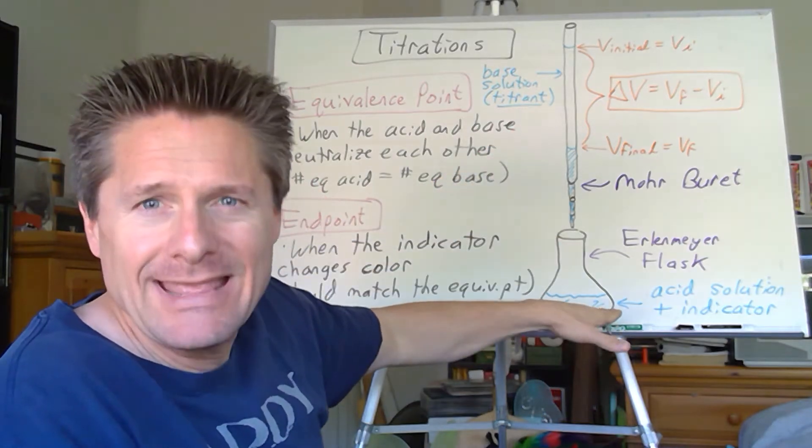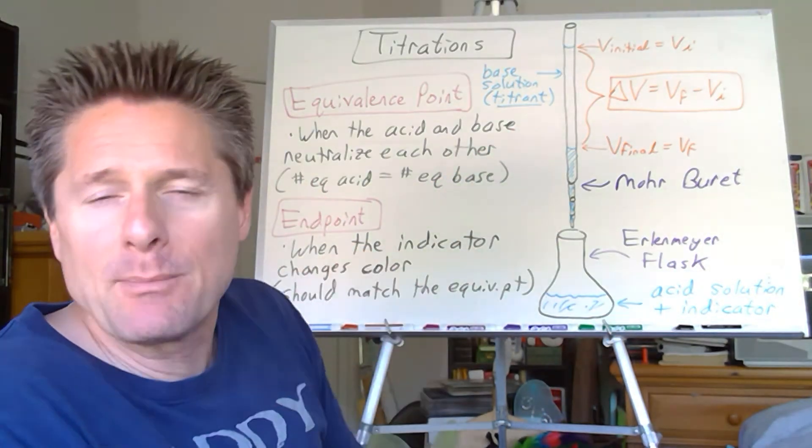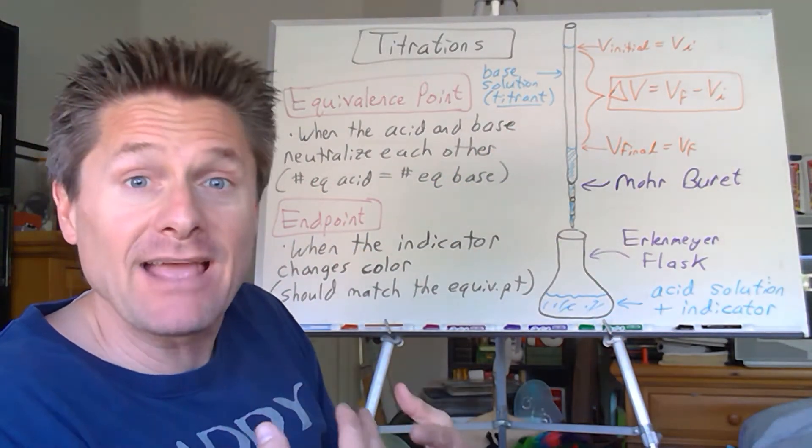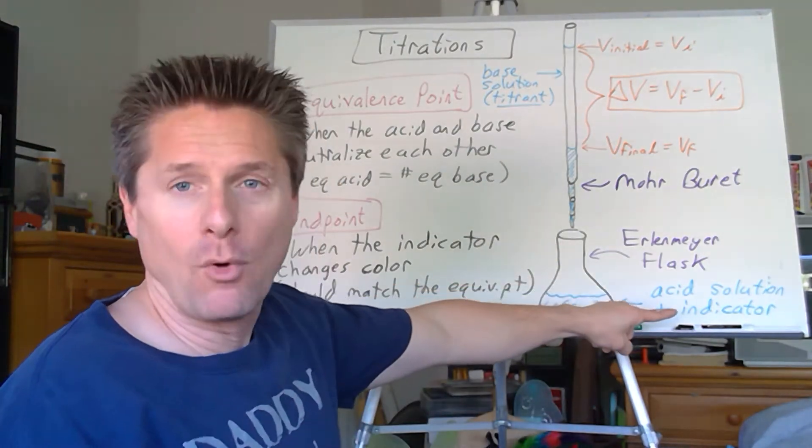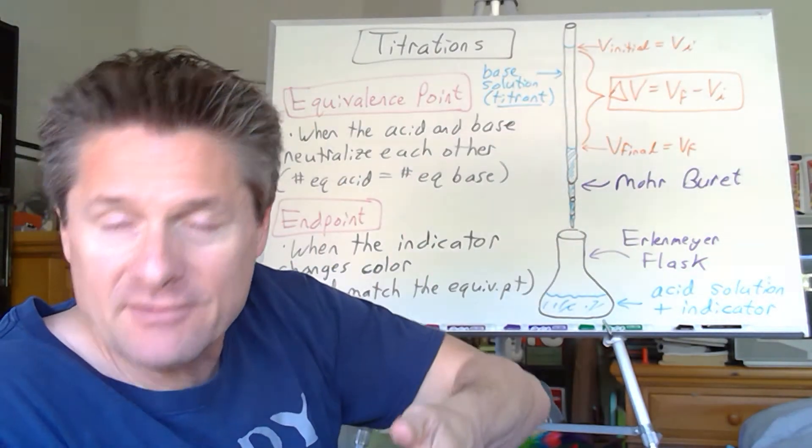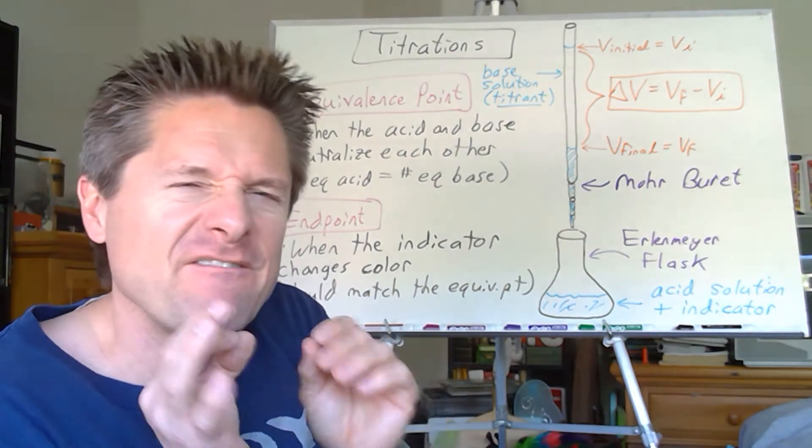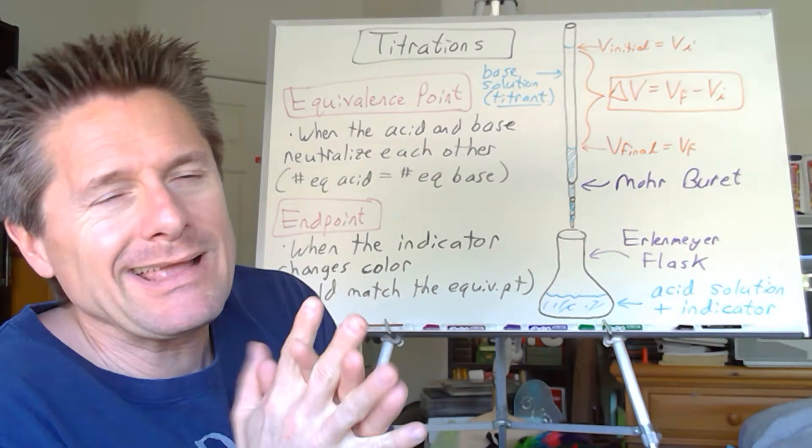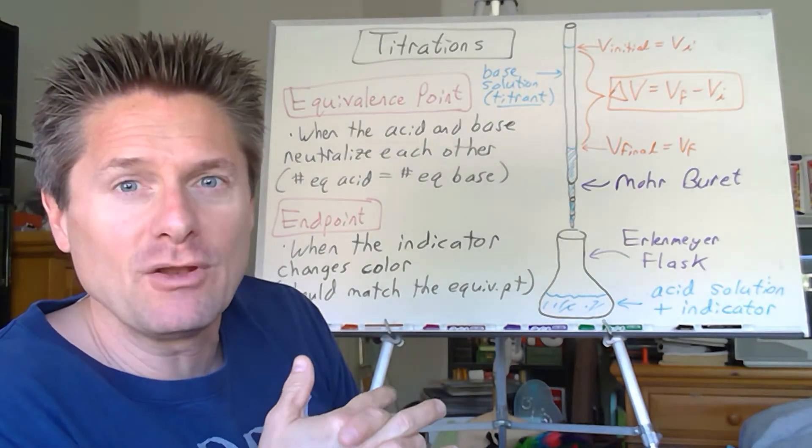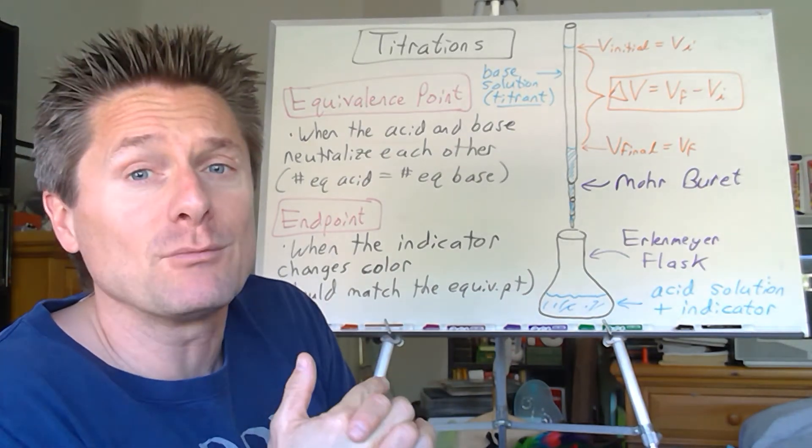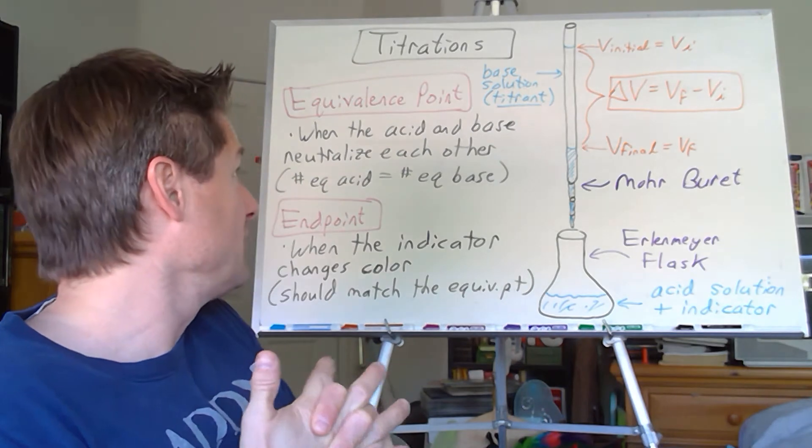And if you go past the endpoint, there's an option in lab where you can back titrate it. Go add some more acid, turn it colorless again, and then add some more base. You can go back and forth until you get the faintest color change possible. It complicates the mathematics and calculations a little bit, but makes it so it's almost impossible to screw this up.